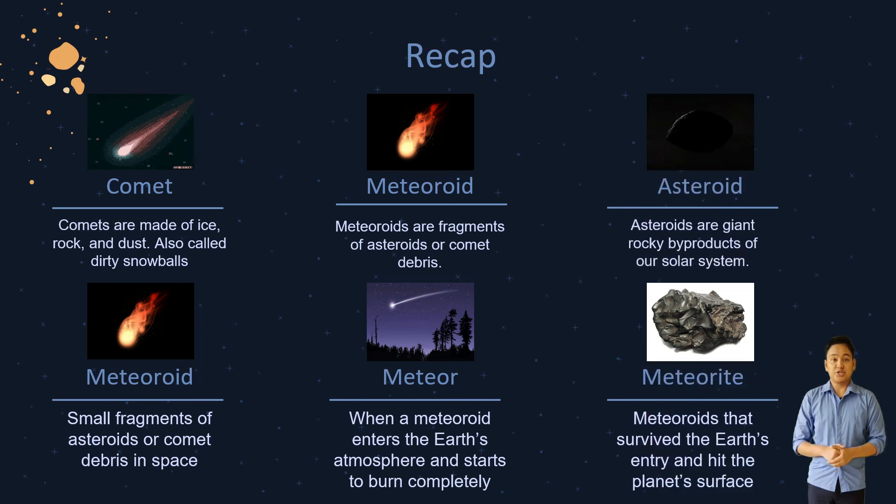Asteroids are big, chunky rocks that usually orbit around the asteroid belt between Mars and Jupiter. Asteroids are failed or unborn planets, but not big enough to be classified as a planet.